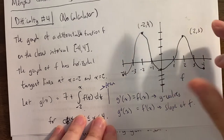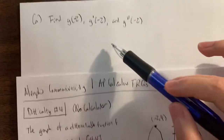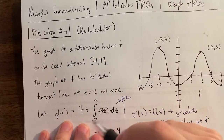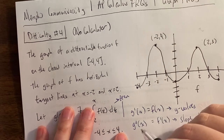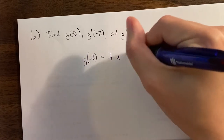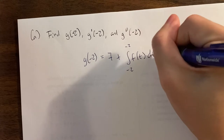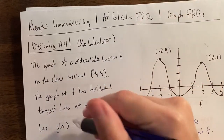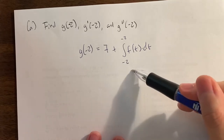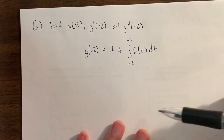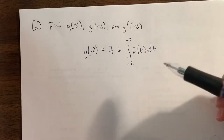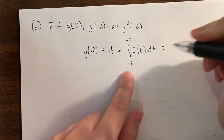The first question asks us to find g of negative 2, g prime of negative 2, and g double prime of negative 2. G of negative 2 equals 7 plus the integral from negative 2 to negative 2 of f(t) dt. When we plug in negative 2, it's the area between negative 2 and negative 2 — an integral from a number to itself is zero by an integral property. So it's just 0 plus 7, which equals 7.